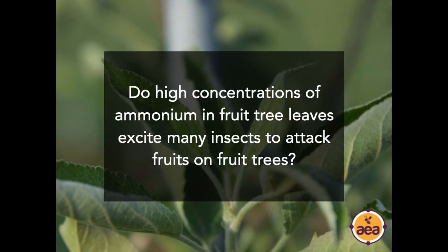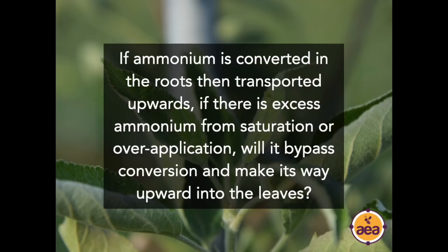Question: do high concentrations of ammonium in fruit tree leaves excite many insects to attack fruits? Yes — when you have abundant levels of ammonium in a plant, this goes back to original research by Dr. Philip Callahan on plant-insect communication systems in the 1960s. He described that insects are attracted to plants with a very strong infrared signature. Plants with high ammonium levels show up as, in Callahan's direct words, 'a neon light against a dark background' in the infrared spectrum, because ammonium is an infrared signal amplifier — it significantly increases that plant's attractiveness to insects.